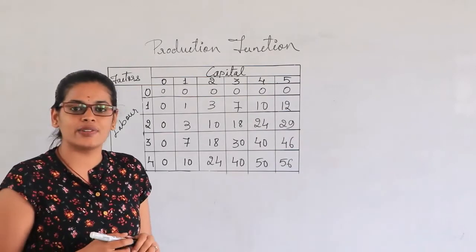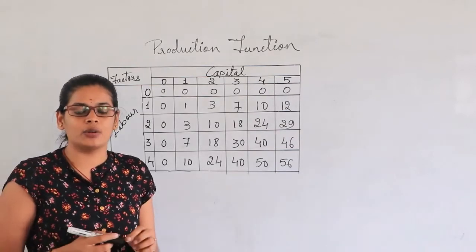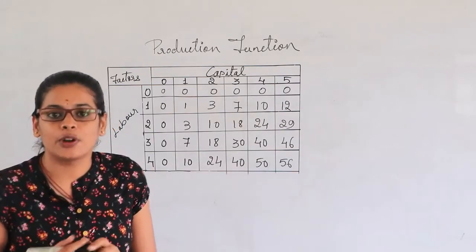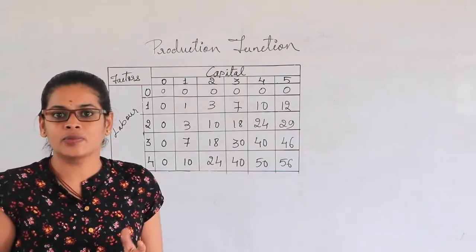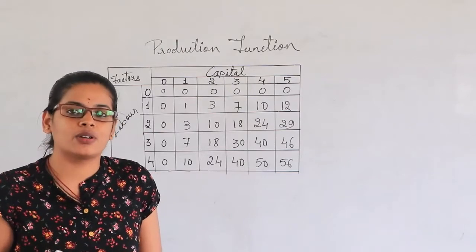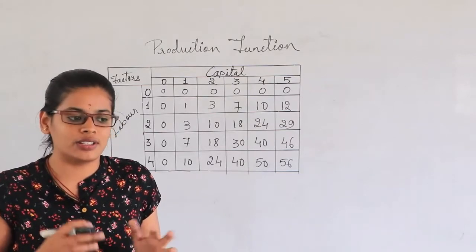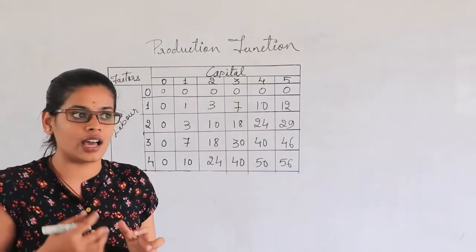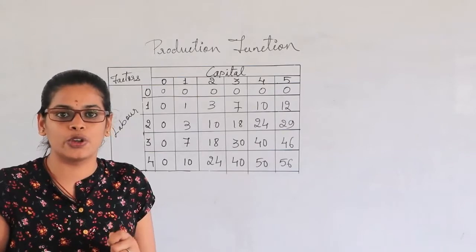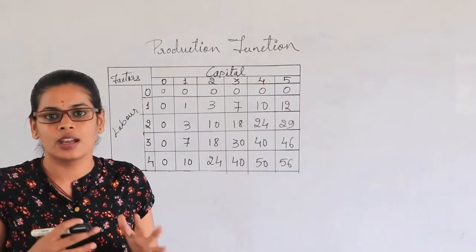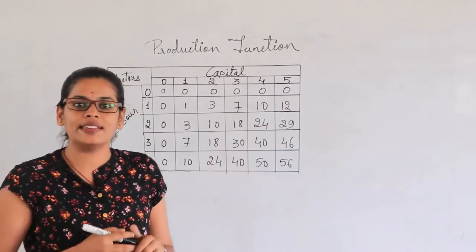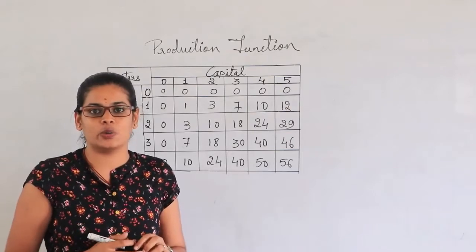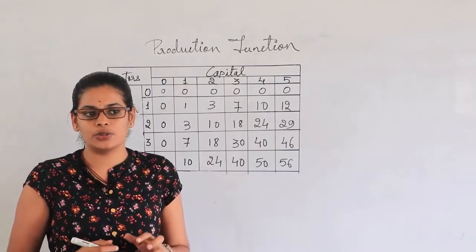In the last class we were discussing about the introduction of production, producers and the cost. This chapter is all about how the producers are going to produce the commodities. In this chapter we will be studying the behavior associated with the producers.